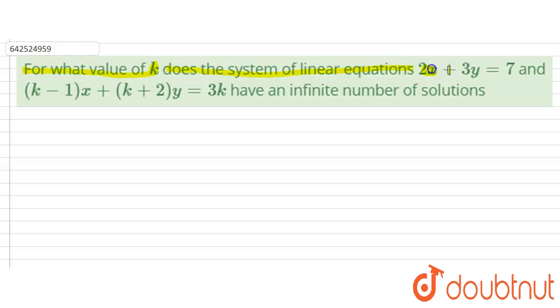The first equation is 2x plus 3y equals 7. The second equation is (k minus 1)x plus (k plus 2)y equals 3k. Now both of these equations must have infinite number of solutions. So we need to find the value of k for which this happens.